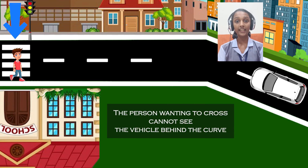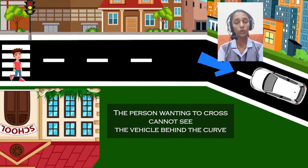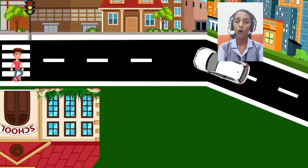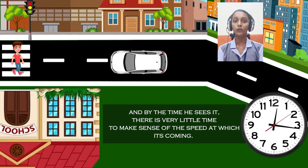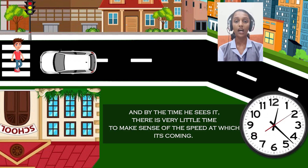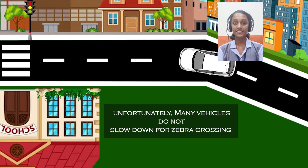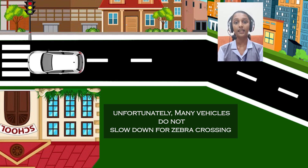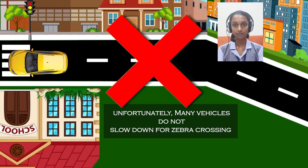Unfortunately, in India, the rule that vehicles must stop at the zebra crossing is always violated. So we propose to implement a road crossing assistant where the estimated time that a vehicle takes to reach the zebra crossing is calculated and displayed to the pedestrian.